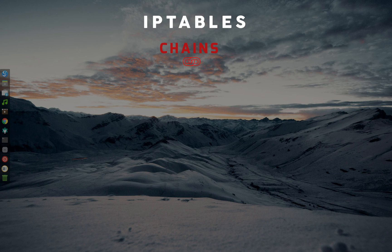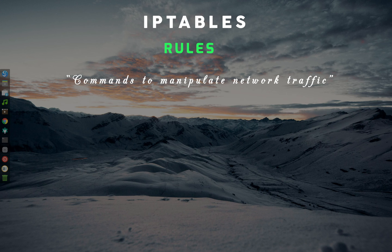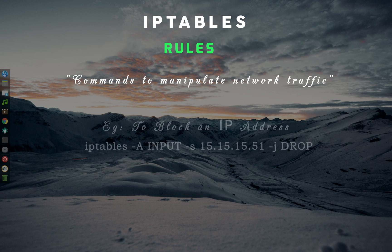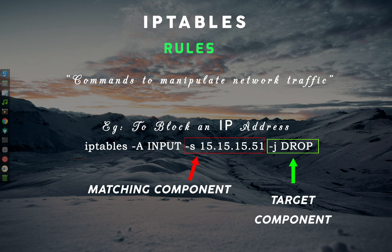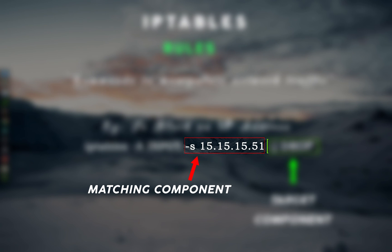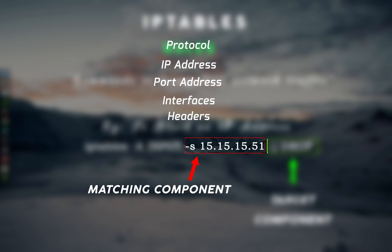Now we have covered tables and chains. The last thing is IPTables rules. Rules are user-defined commands to manipulate network traffic. As each chain is called, the packet will be checked against each rule within the chain in order. If the packet does not match, the next rule in the chain is examined. If it does match, the next rule is specified by the value of the target. Each rule has two components: a matching component and a target component. The matching component defines different conditions to match by — such as protocol type, destination or source address, destination or source port, input or output interface, headers, etc. These can be combined to create really complex rule sets.